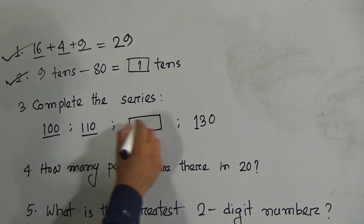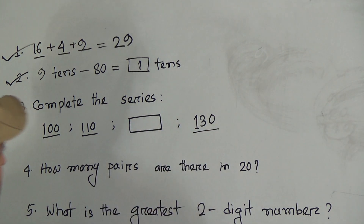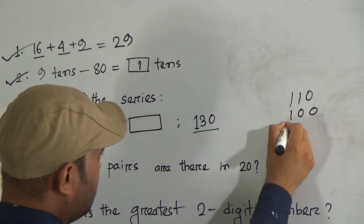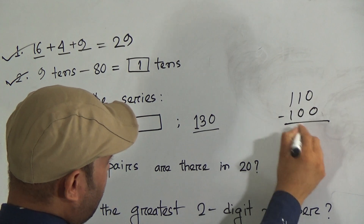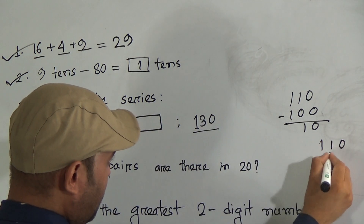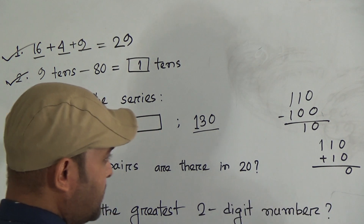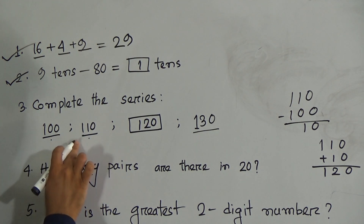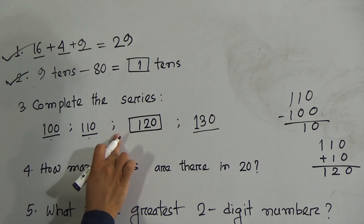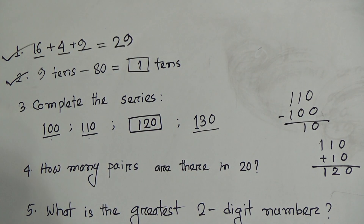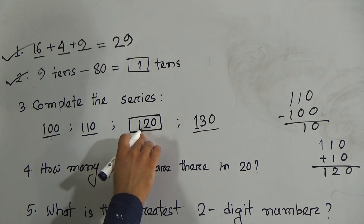Question number 3: complete the series. The first number is 100, the second is 110, here is a blank, and the last one is 130. The difference between 110 and 100 is 10. So 110 plus 10 equals 120. If I put 120 here: 100 to 110 is a distance of 10, 110 to 120 is also 10, and 120 to 130 is also 10. So the number to put here is 120.